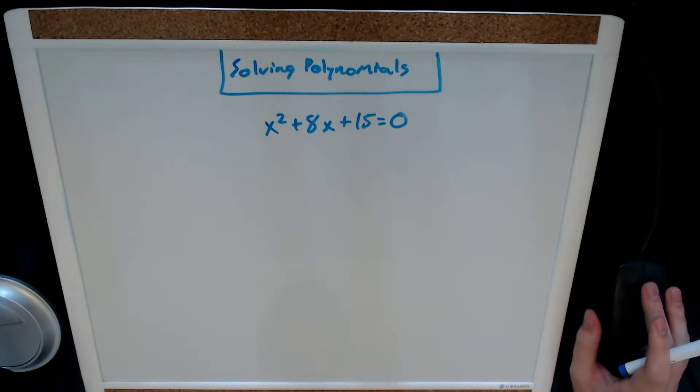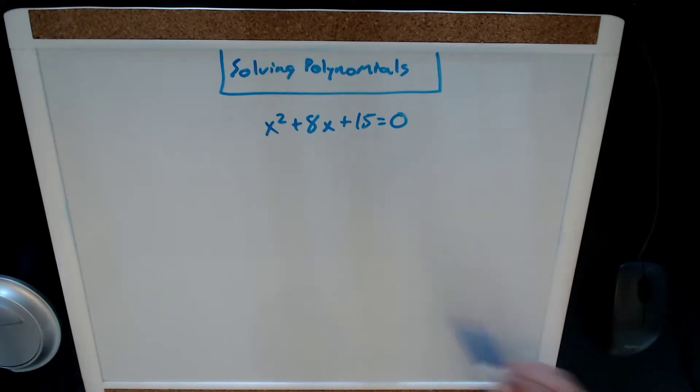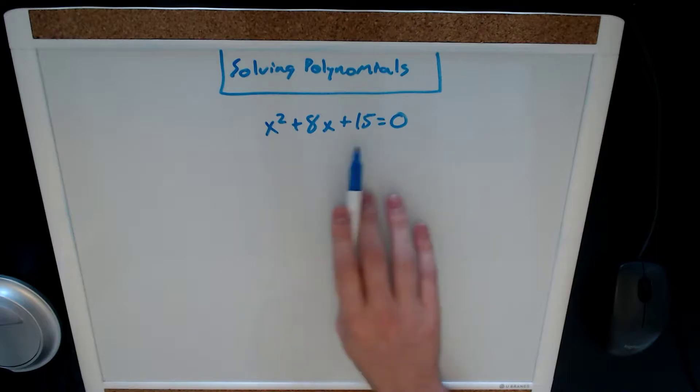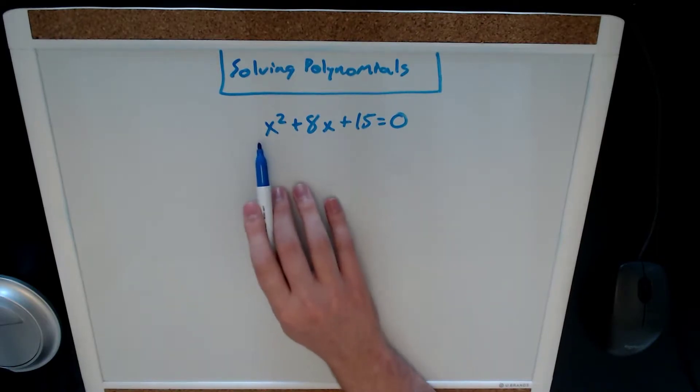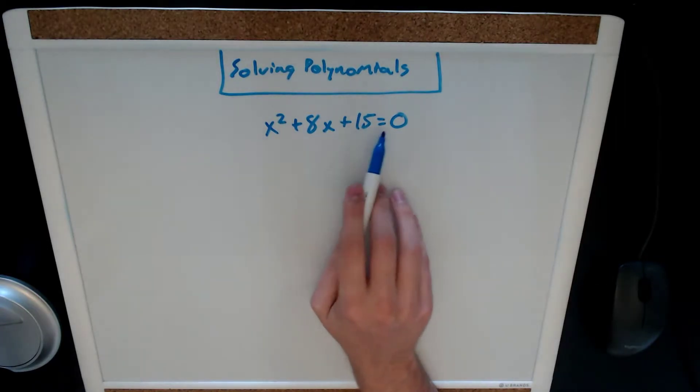Hello, in this video we will be going over how to solve polynomials in the most basic way. In order for this to work, we must have our second degree polynomial set to zero in the form ax squared plus bx plus c equals zero.